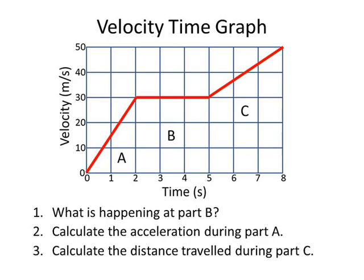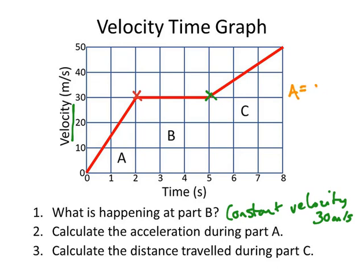This looks really similar, but this is a velocity-time graph. Pause the video and answer the questions — what's happening at part B and so on? At part B, the velocity is 30 at the start and still 30 at the end, so it's travelling at a constant velocity of 30 metres per second. To calculate the acceleration during A: acceleration is change in speed (end speed minus start speed) divided by time. The end speed is 30, start speed is 0, change is 30, divided by 2 seconds — so 15 metres per second squared.